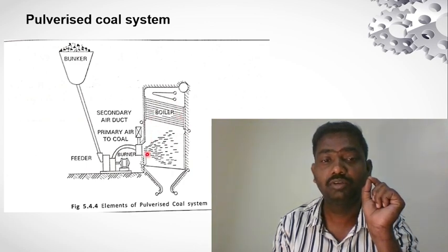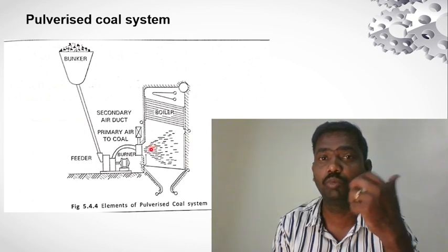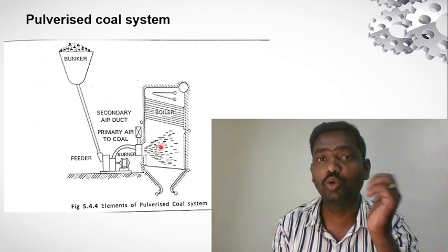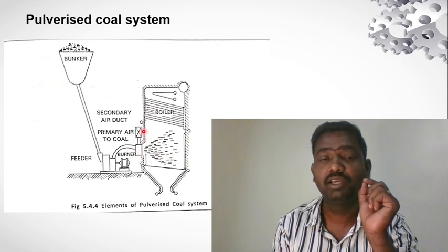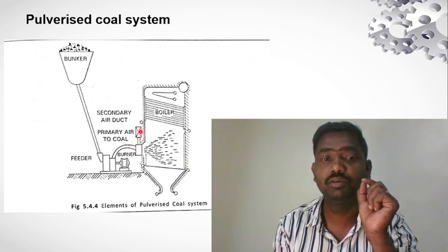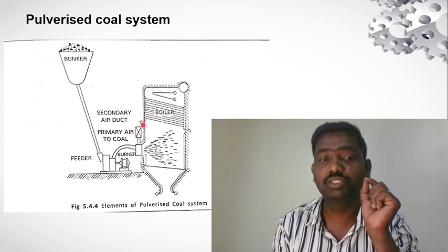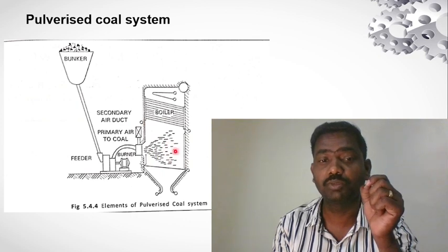This boiler will generate burning heat. We need to pump in external air — this is called primary air. We use the crusher to produce fine powder, and the primary air is used to pump it into the burner along with secondary air.